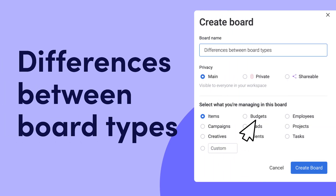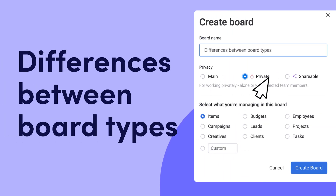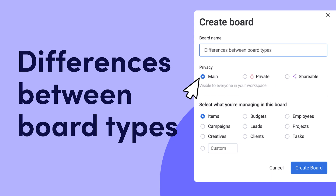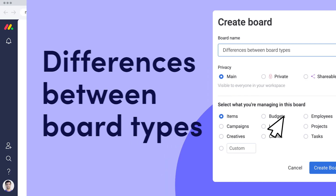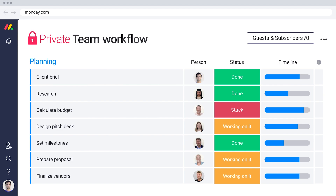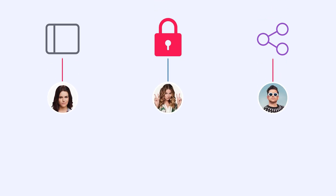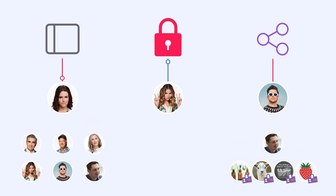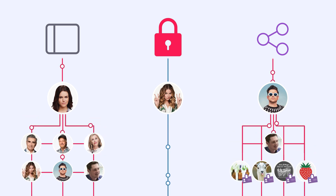Hey, it's Allison and today I'm going to show you how to set every project up for success with our three different board types. Monday.com has three board types: Main, Private, and Shareable. Each allows for different levels of access so that every board can be tailored to fit your needs.